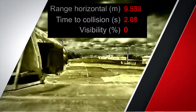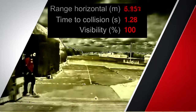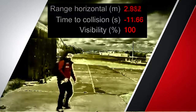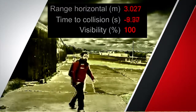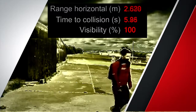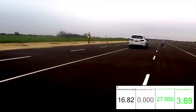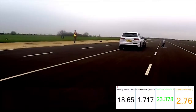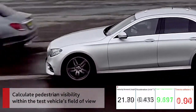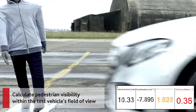The RT Range system can calculate pedestrian target visibility if that pedestrian emerges from behind a parked car or any other obscurity. The RT Range system calculates the precise point that the pedestrian came into its field of view, and then what the vehicle did during its braking manoeuvre.